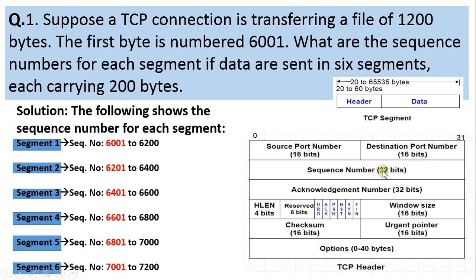When all sequence numbers are consumed, the sequence number wraps back to 0. The sequence number field always mentions the initial sequence number — that is, the first byte number carried in the TCP segment. So for example, if the TCP segment is carrying the first byte number as 4001, then the sequence number field will have the number 4001.